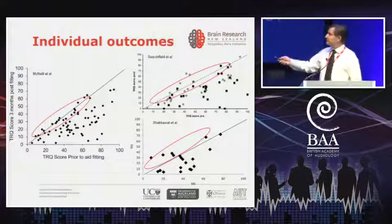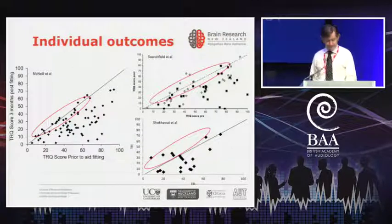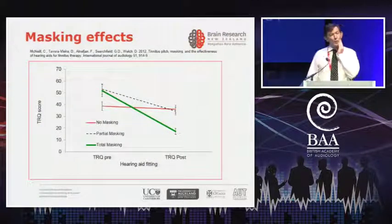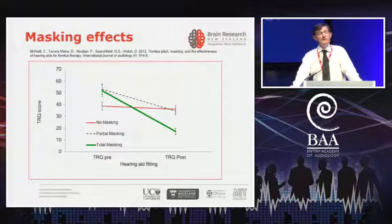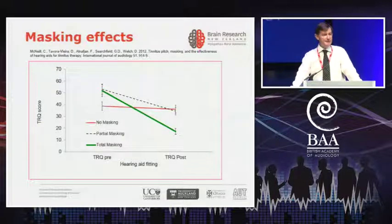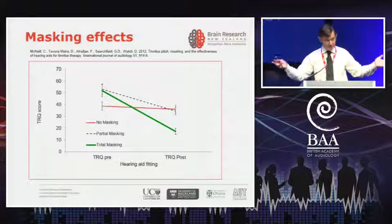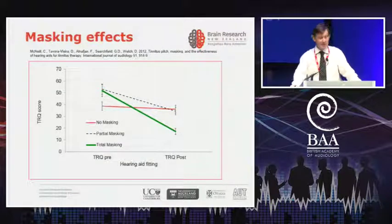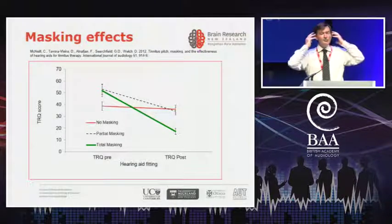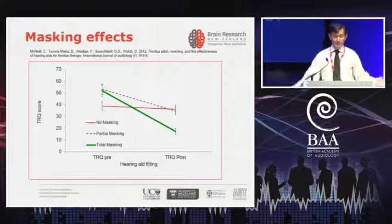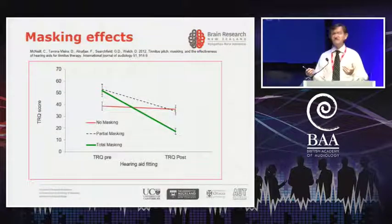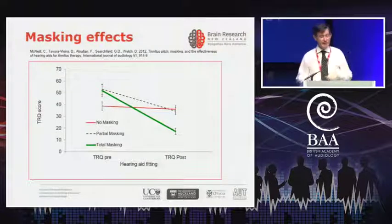Referring back to this particular study, we were able to break these individuals into three categories. Those who, when first fitted with hearing aids, could not hear their tinnitus at all — so with hearing aids on, the tinnitus was masked. A second group where fitting the hearing aids produced no change in tinnitus whatsoever. And a third group who had the hearing aids on, could still hear their tinnitus, but it was diminished — they achieved partial masking.